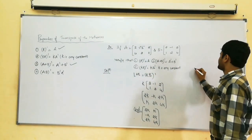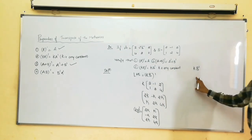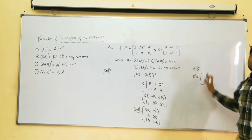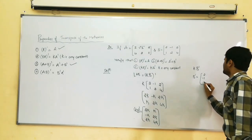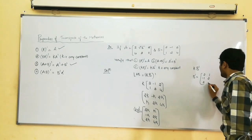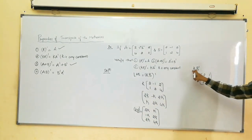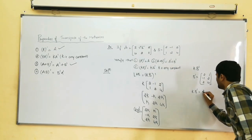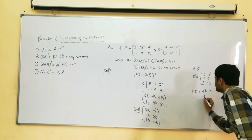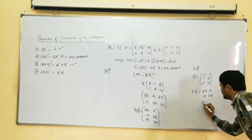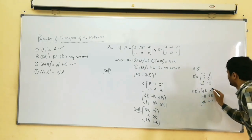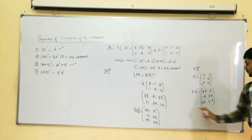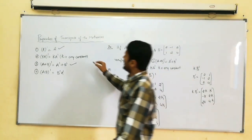In the RHS, K into B dash. First find B transpose: first row as first column gives 2, 1; second row as second column gives minus 1, 2; third gives 2, 4. Now multiply by constant K: K into B dash equals 2K, K; minus K, 2K; 2K, 4K. Checking LHS and RHS — both answers are the same. Therefore our second property is also verified correct.